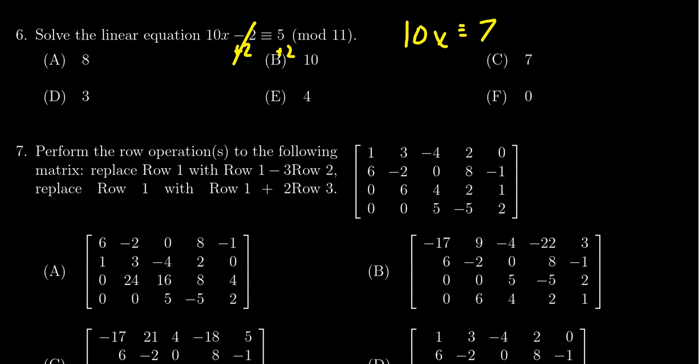As we're working mod 11, if I ever get a number bigger than 10 or smaller than 0, I'm going to reduce that number mod 11. 7 is in the range so I don't need to make any reduction right there.